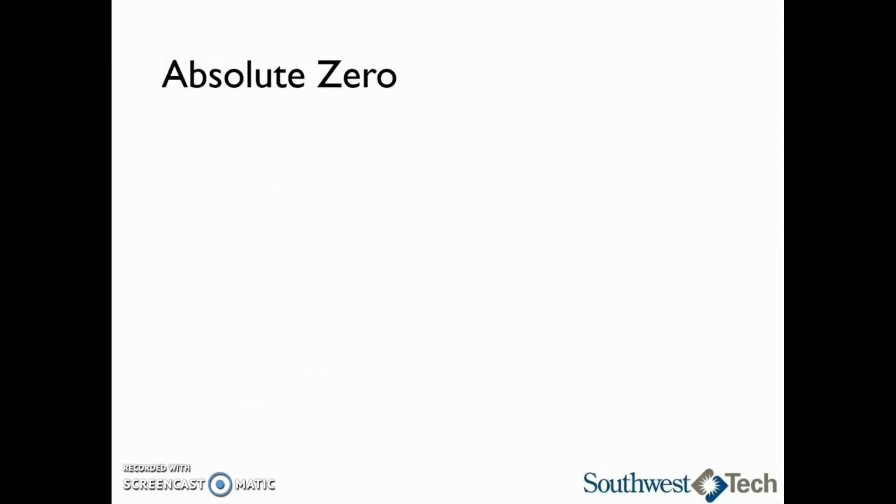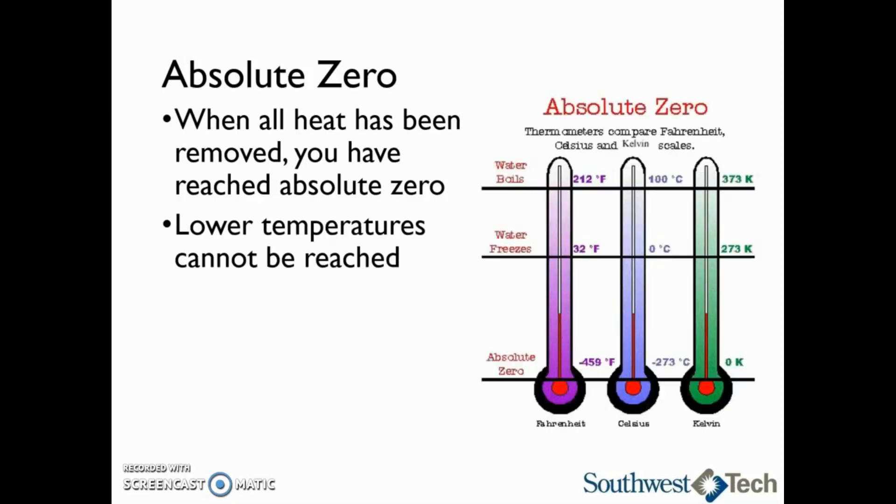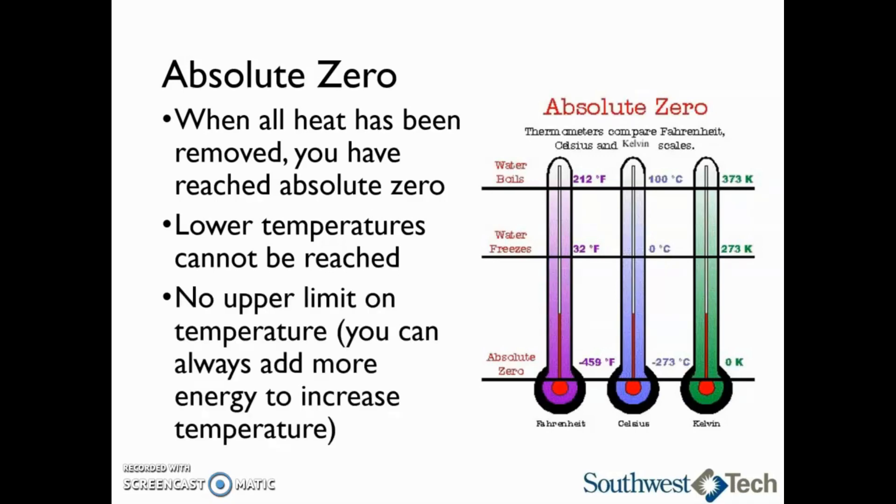When we are talking about heat, it is worth mentioning absolute zero again. When all heat has been removed, you have reached absolute zero. This is where intermolecular movement ceases to exist. Temperatures lower than absolute zero cannot be reached. However, there is no upper limit on the temperature because you can always add more energy to increase the temperature.